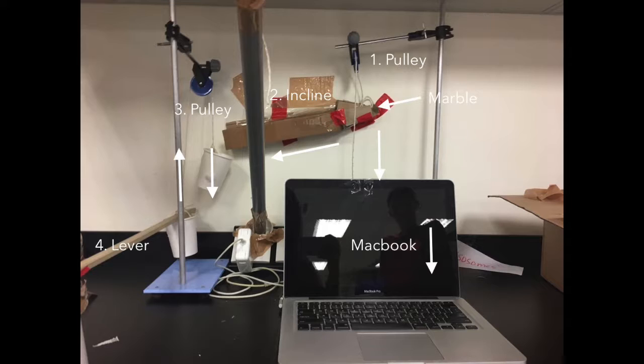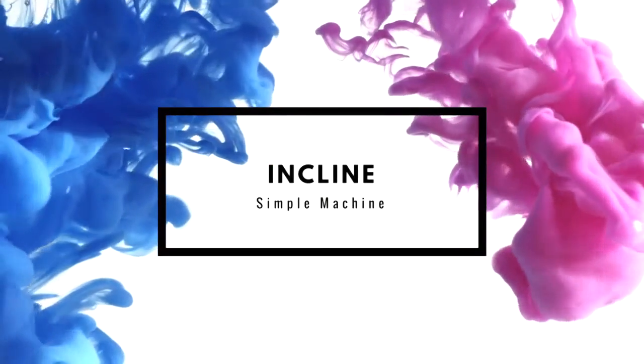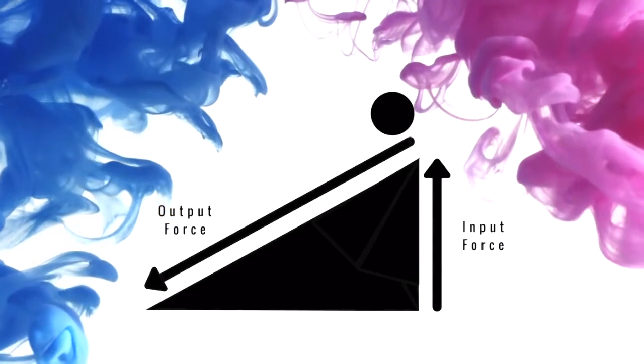The marble drops onto an incline plane, the second type of simple machine, and rolls into a cup tied to another pulley. An incline plane is a sloping surface that uses less force over distance to lift the object. The height of the incline is the input force, and the length of the incline is the output force.